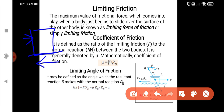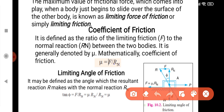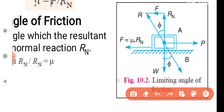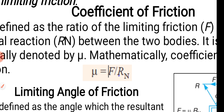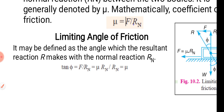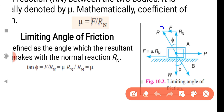If you apply the opposite force and create a certain limiting friction force FF, the resultant force to the normal reaction is called the limiting angle of friction.